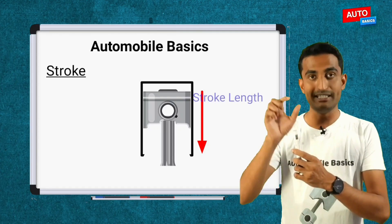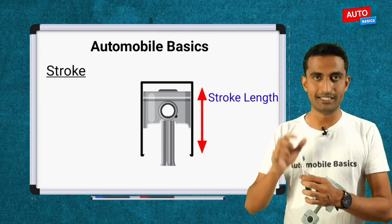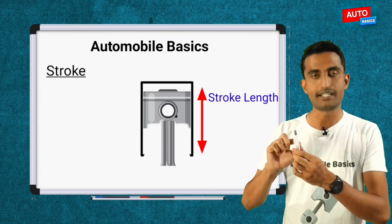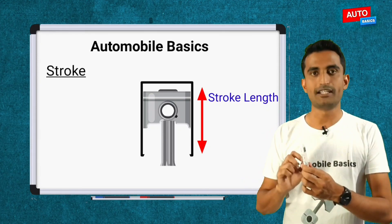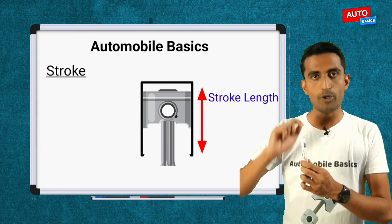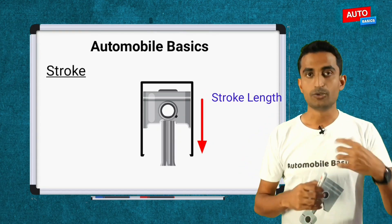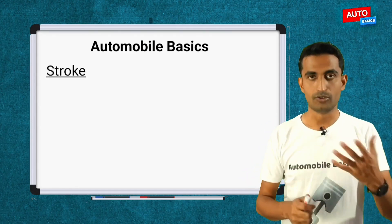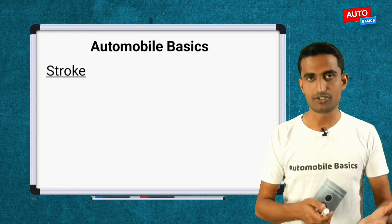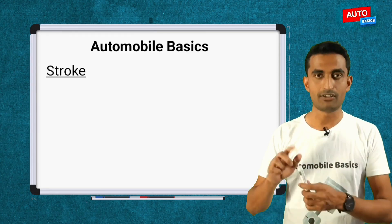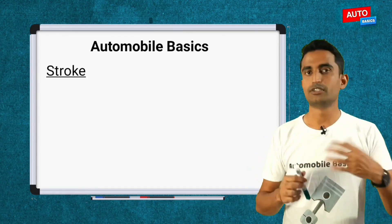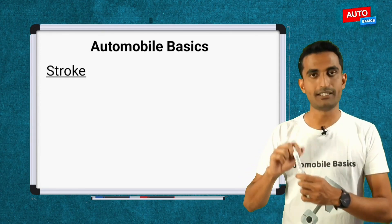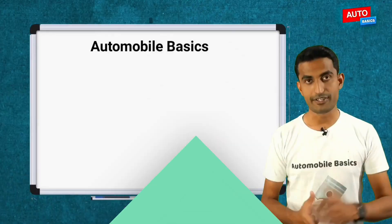So stroke is the stroke length — the distance the piston travels inside the cylinder in the combustion engine. That is why we call it stroke length. So bore is the diameter and stroke is the length of travel. These are very important terminologies. You can use them to calculate CC, which we will cover in a separate video. So next is compression ratio.